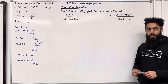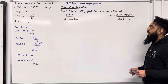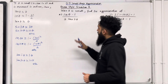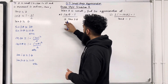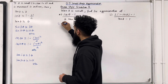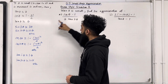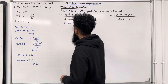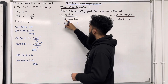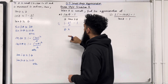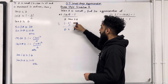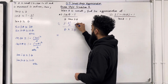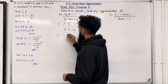Here is exam style question 1. When theta is small, find the approximation of part A and part B. For part A: (cos θ - 1) over (θ · tan 2θ). We can replace cos θ with 1 minus θ² over 2, giving us minus θ² over 2 in the numerator, with the 1 and minus 1 cancelling.